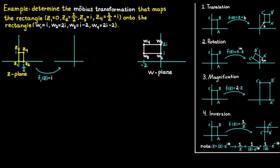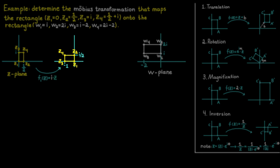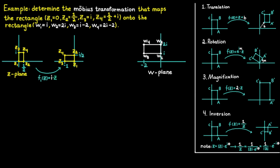We can fix this by rotating our figure 90 degrees — that is pi over 2 — anti-clockwise. Using the formula for rotation we get the following, which we can simplify since e raised to the power of i times pi divided by 2 is equal to i. The next thing we can do is adjust the size of the figure: our new rectangle is only one long and a half high, while the other one is two long and one high. So we need to use magnification to make our new rectangle twice as big, which we can do by using the following function. Note that we are using F1 and not C in this formula because we are transforming our new rectangle — the result of our first transformation F1.